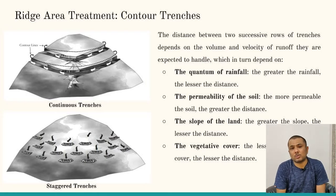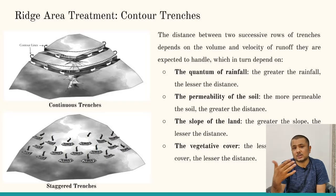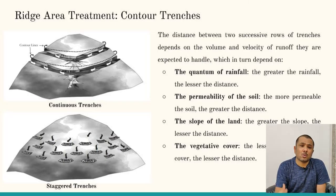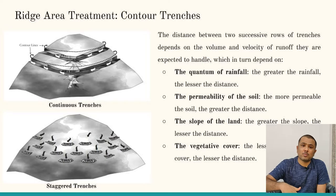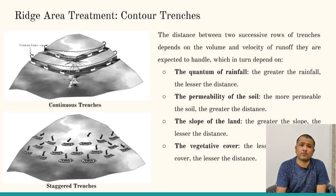The third criterion is soil permeability. If the soil is highly permeable, more water is stored in the soil; if less permeable, less water is stored, and erosion and velocity increase. So soil type plays a predominant role in defining trench size. The fourth criterion is vegetative cover — if vegetative cover increases, flow velocity reduces; if it decreases, velocity increases.